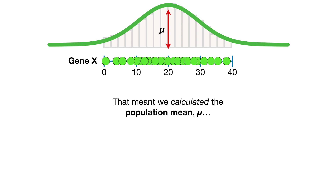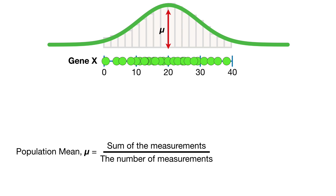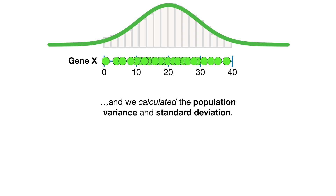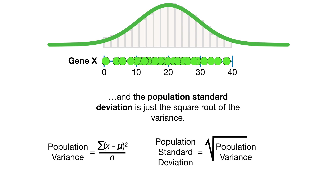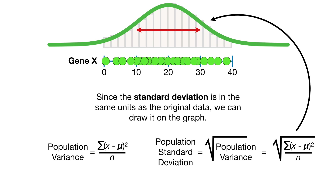That meant we calculated the population mean, mu. The population mean mu equals the sum of the measurements divided by the number of measurements, which equals the average measurement mu. We also calculated the population variance — the average of the square distances between the data and the population mean — and the population standard deviation, which is the square root of the variance. Since the standard deviation is in the same units as the original data, we can draw it on the graph.